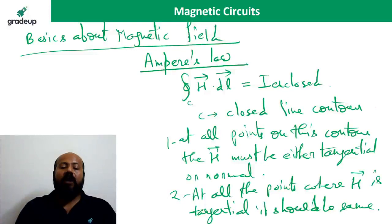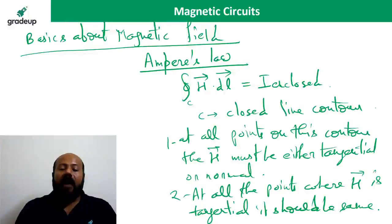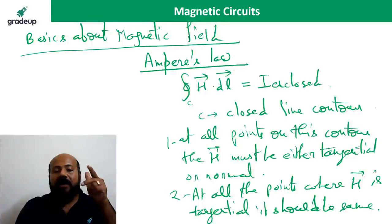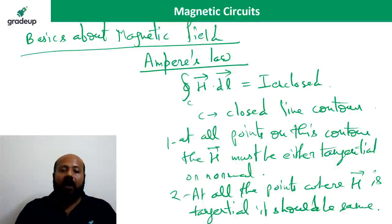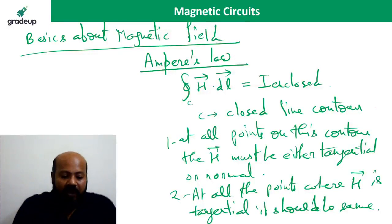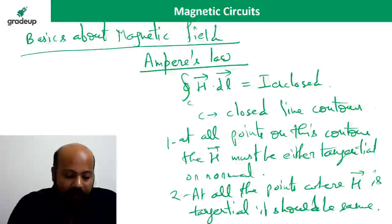The second condition for deciding the closed line contour shape is: at all the points where H is tangential, it should be the same. These are the two important points you should consider when deciding this closed line contour. So you should take this shape by considering: number one, H must be either tangential or normal at all points; number two, where H is tangential, it should be the same.